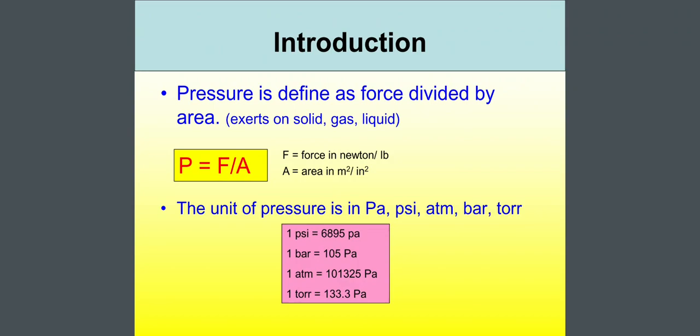The unit of pressure is in pascal, psi, atm or atmosphere, bar, torr. One psi is equal to 6895 pascal. One bar is equal to 105 pascal. One atm or one atmosphere is equal to 101325 pascal and one torr is equal to 133.3 pascal.